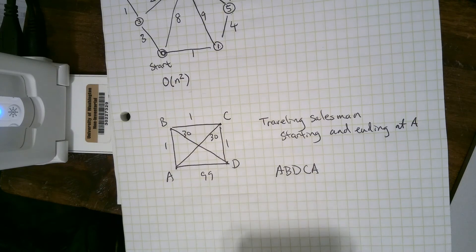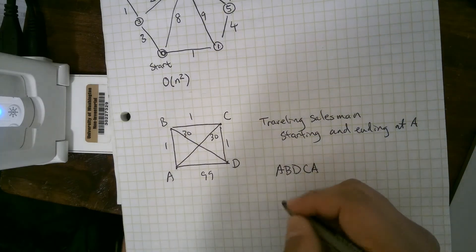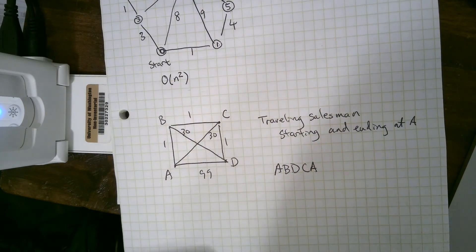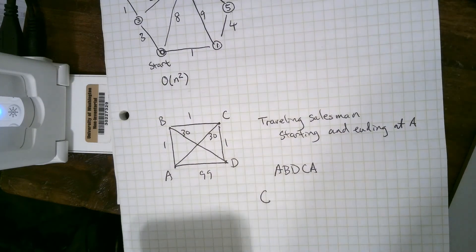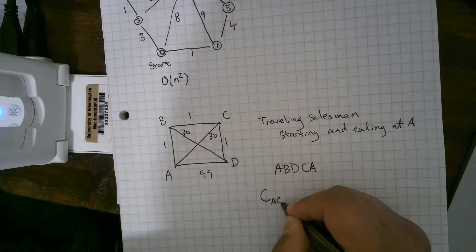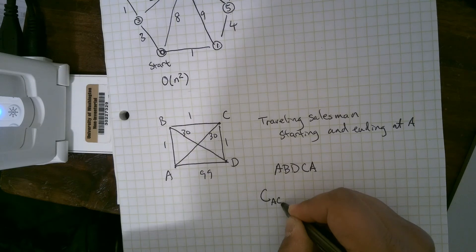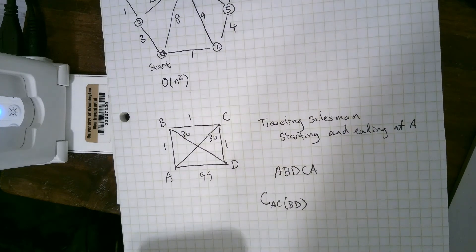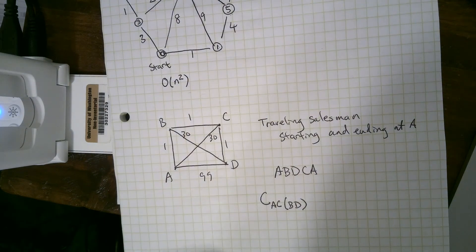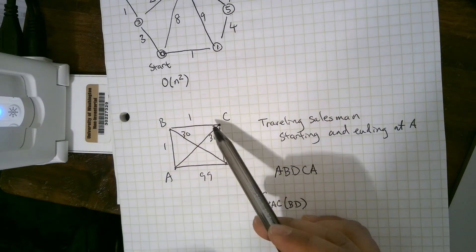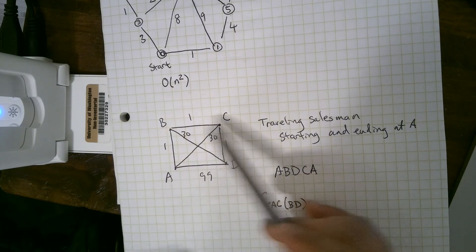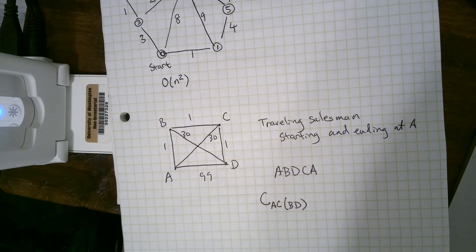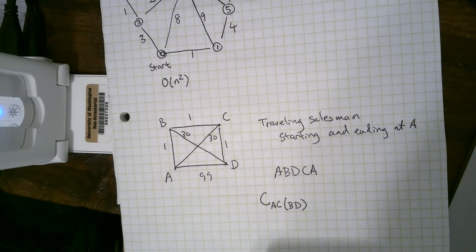And the problem with Dijkstra's is, we're going to use the notation from the previous video now, from the Heldkarp algorithm, we never look at the path from A to C going through B and D. We can look at the shortest path from A to C, but we won't look at the shortest path from A to C that also goes through B and D. That's not something Dijkstra's considers. So that's why Dijkstra's cannot solve the traveling salesman problem.